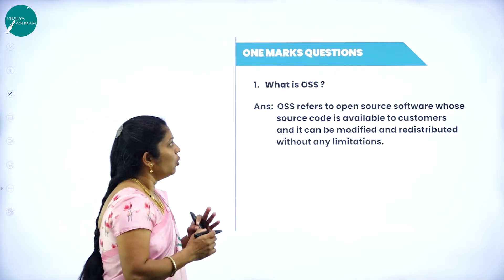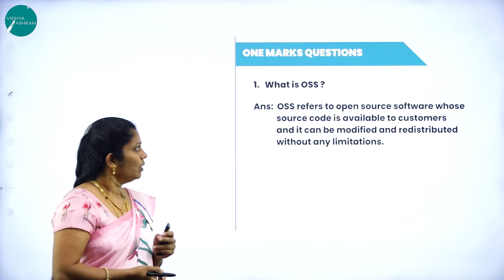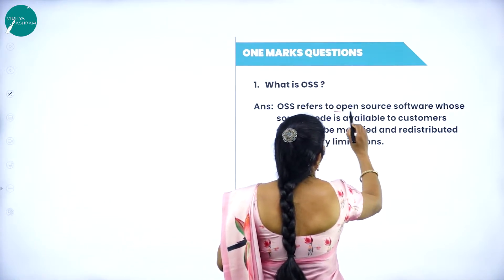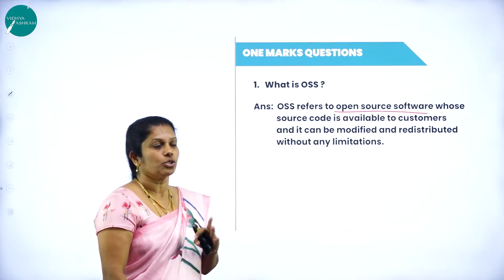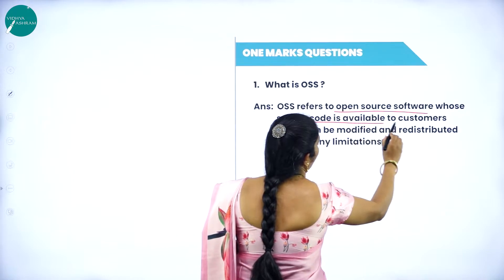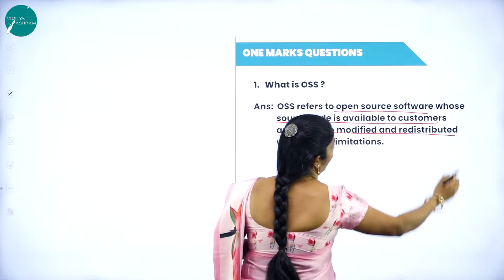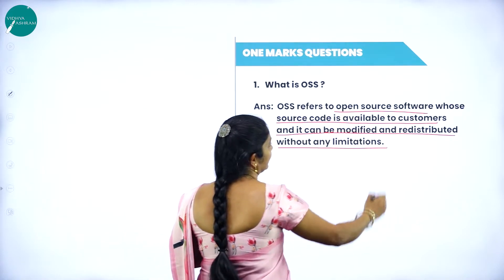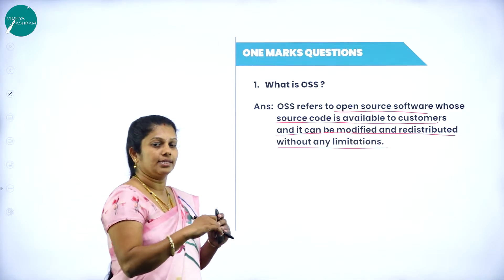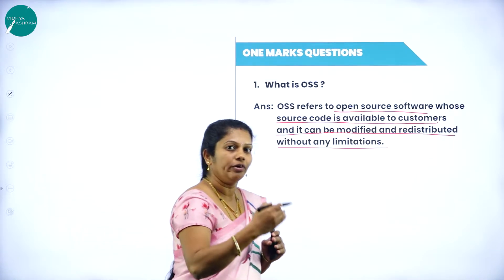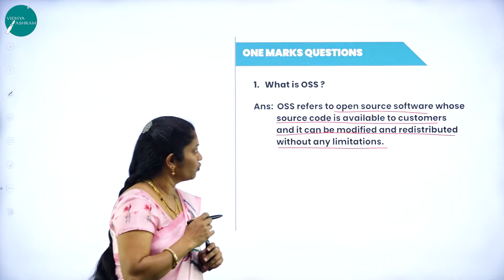The most expected question is: what is OSS? OSS refers to Open Source Software — software whose source code is available to customers and it can be modified and redistributed without any limitations. Consider you have some code; that code can be copied and redistributed to whoever you want. That is Open Source Software.